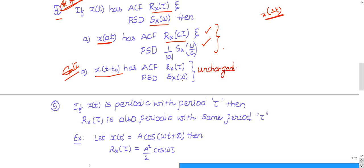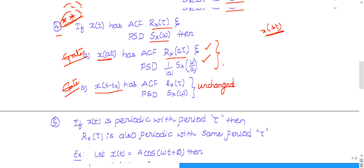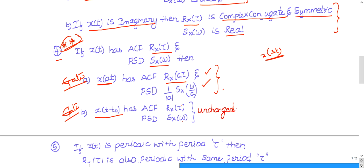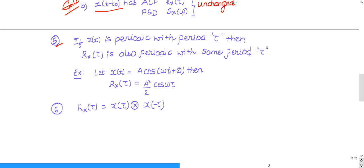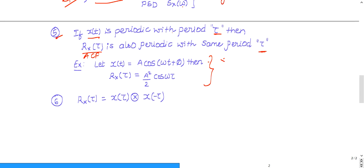Also, if the signal is delayed, the power spectral density and autocorrelation function do not change — this was a previous GATE question. Property 5: If x(t) is a periodic signal with period T, then R_x(τ) will also be periodic with the same period T. If x(t) is a cosine function, then R_x(τ) = (A²/2)cos(ωτ). These are all previous GATE exam questions.